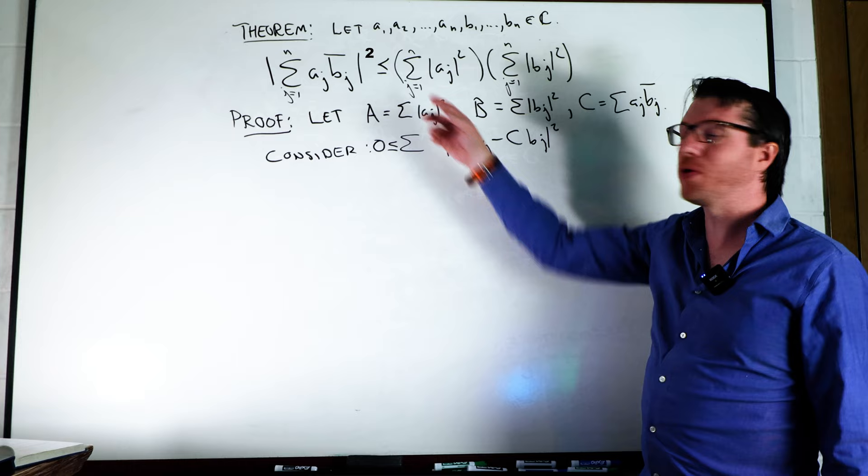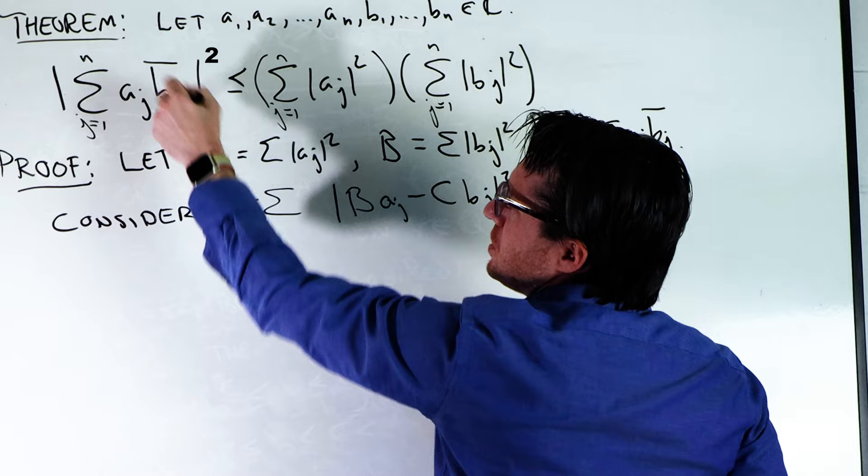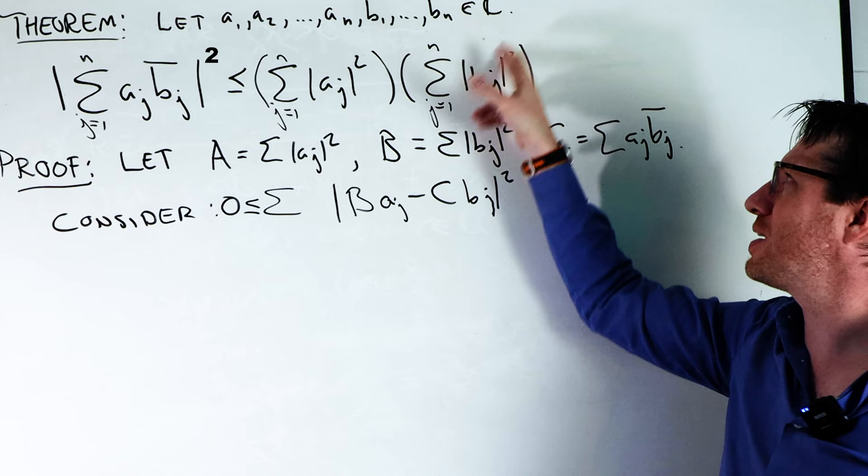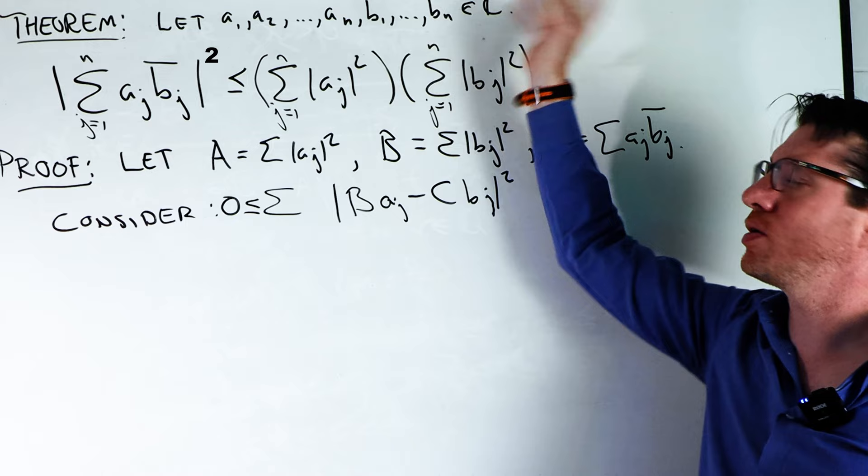This is the Cauchy-Schwarz inequality. Basically you have the sum of j going from 1 to n of a_j times b_j bar, and this in absolute value is going to be less than the sum of the absolute values of the a_j squared times the sum of the absolute values of b_j squared, where all the a_i's and b_i's are inside the complex numbers.